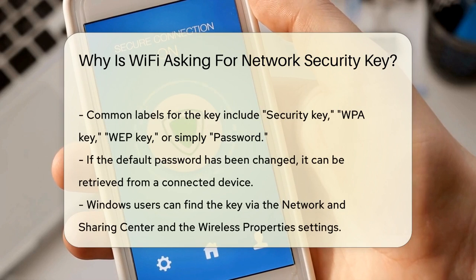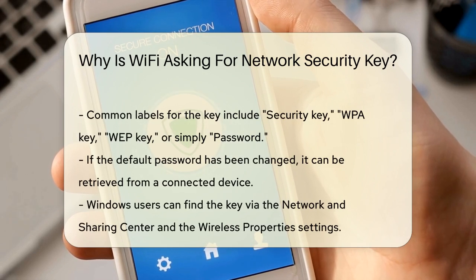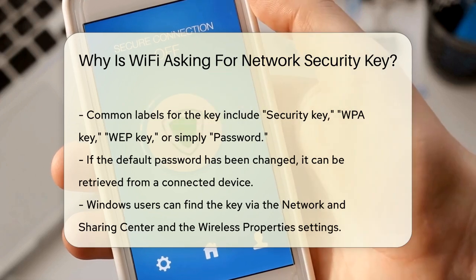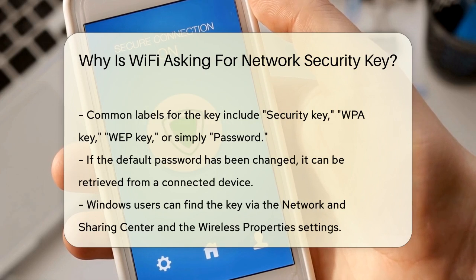If you've changed the default password, you'll need to find it through a device that's already connected to the network. On a Windows computer, you can find the network security key by right-clicking the wireless network icon in the system tray, selecting Open Network and Sharing Center, then clicking on your Wi-Fi network and selecting Wireless Properties. Under the Security tab, check the Show Characters box to reveal the password.